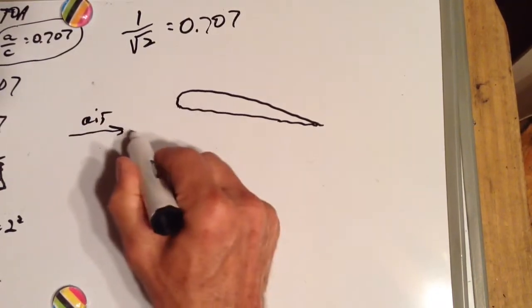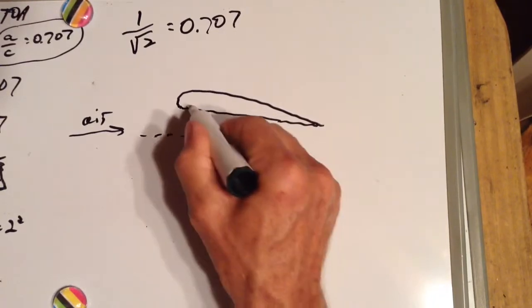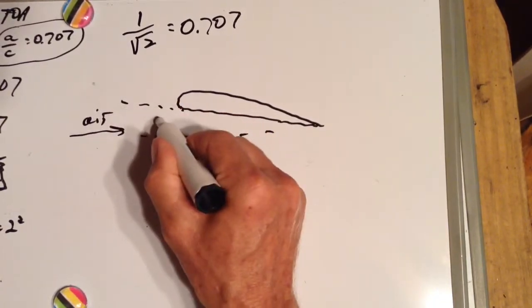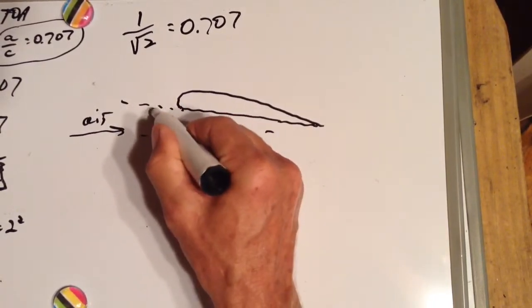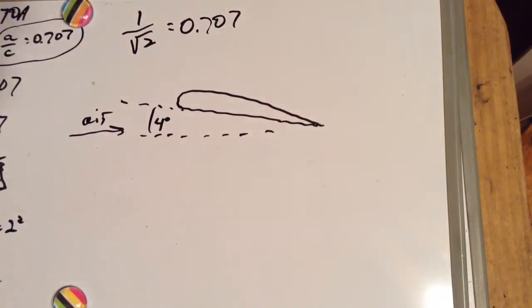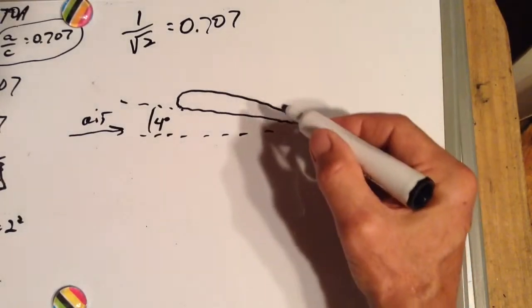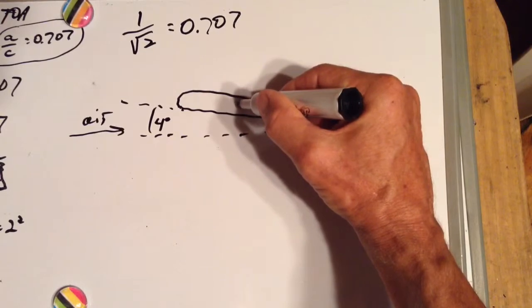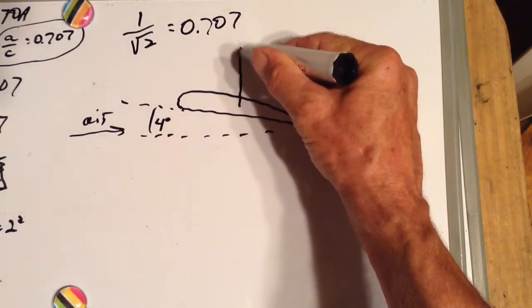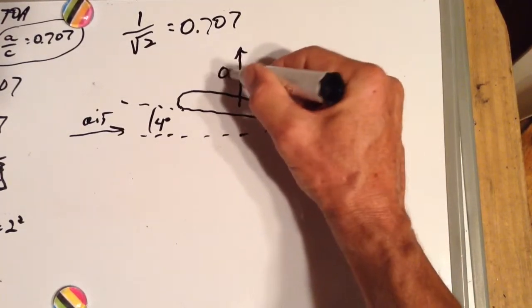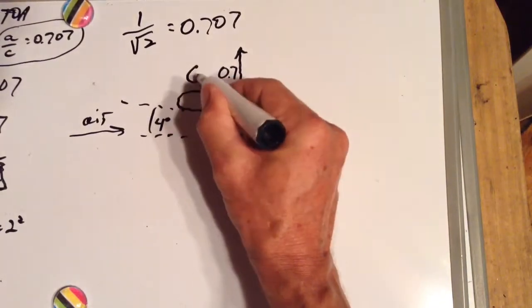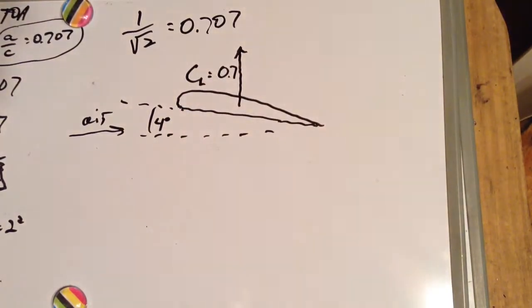Hitting the wing at that angle and this angle is 4 degrees. Let's say its lift coefficient is 0.7. Coefficient of lift equals 0.7.